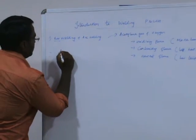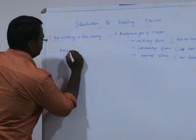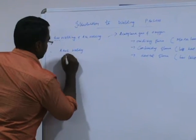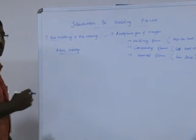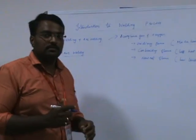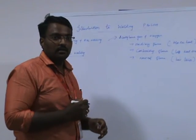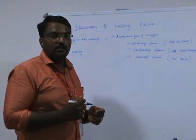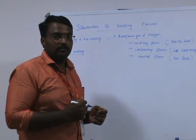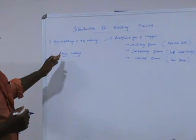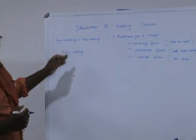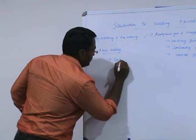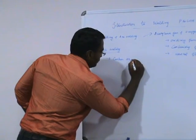Next we will see about arc welding. In arc welding, the name itself implies it is an arc. We will be producing an electric spark for heating the workpiece. Arc welding is subdivided into many types. If you see carbon arc welding, you will be using a carbon arc welding process.